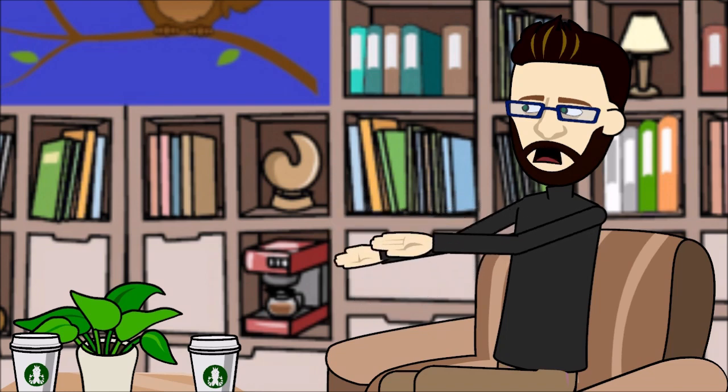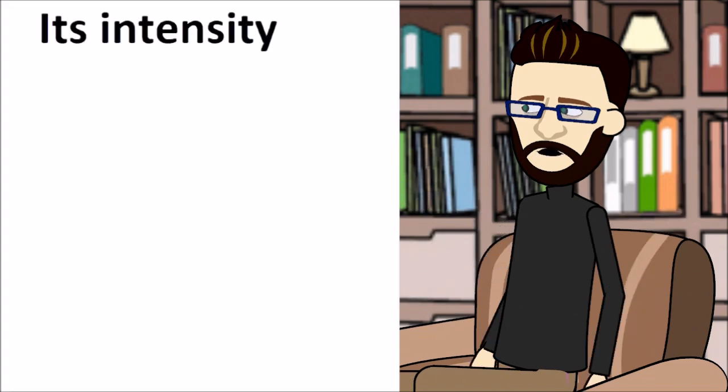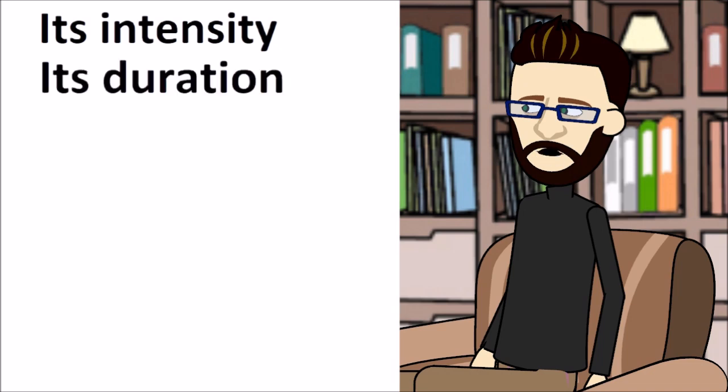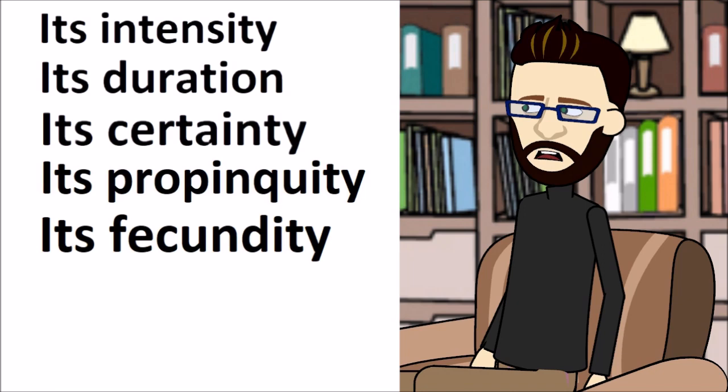He would weigh up the pleasure and pain of a situation by focusing on seven things: its intensity, its duration, its certainty, its propinquity, its fecundity, its purity, and its extent.